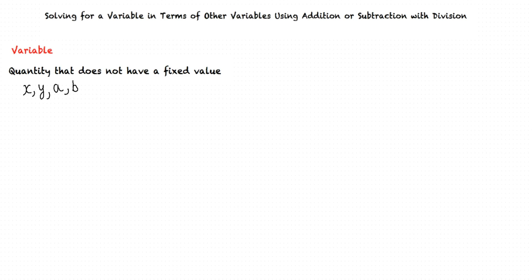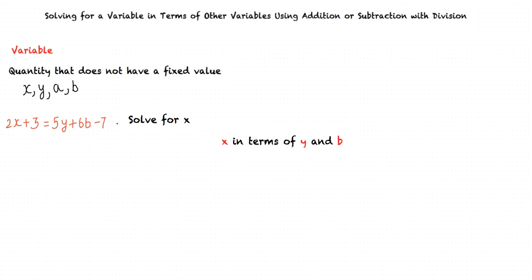Let us consider an example. Let us say we have the following equation: 2x plus 3 equals 5y plus 6b minus 7, and say we are required to solve for x. So here x, y, and b are the variables. We have to solve for the variable x, which would be in terms of y and b in this case.